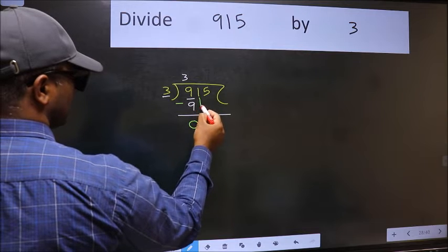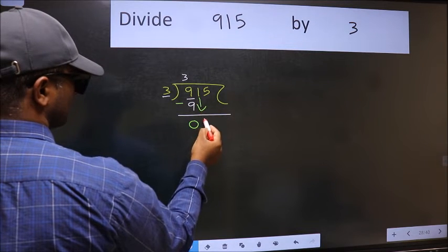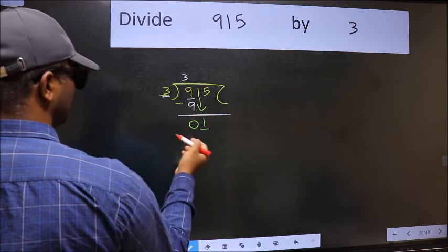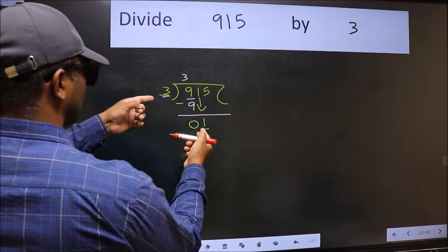After this, bring down the beside number. So, 1 down. Now here we have 1 and here 3. 1 is smaller than 3.